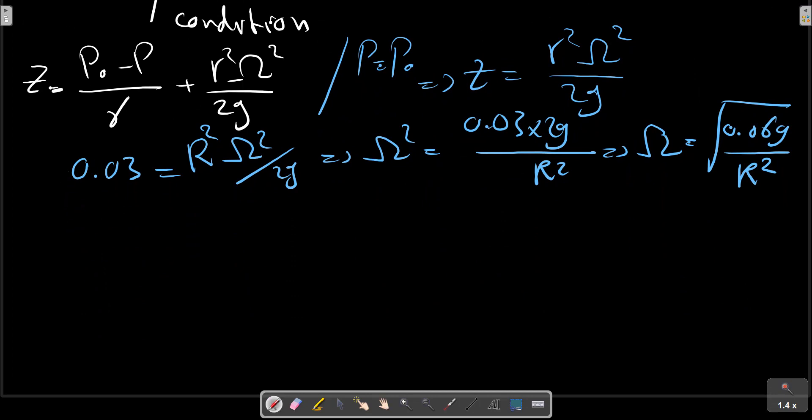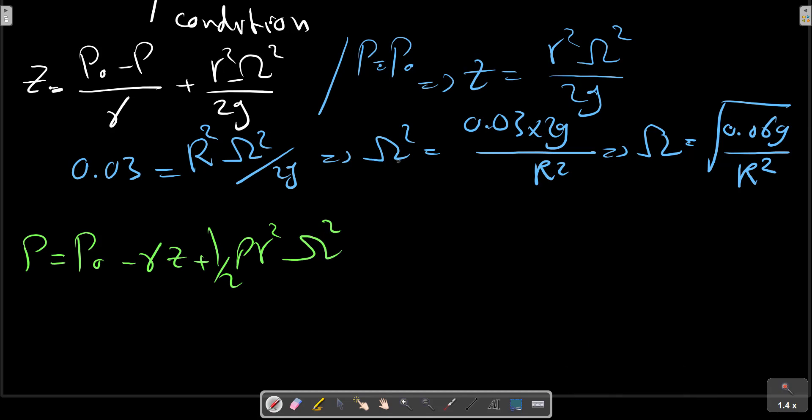This relation: P equals to P0 minus gamma Z plus half of rho R squared Omega squared. R squared, Omega S squared.